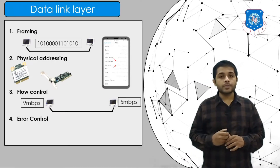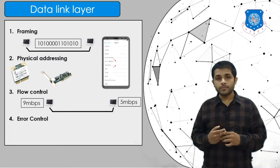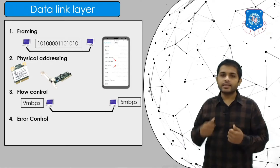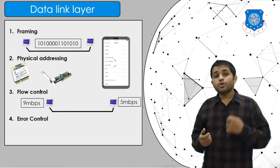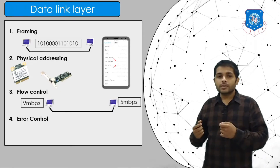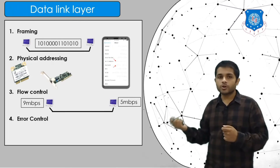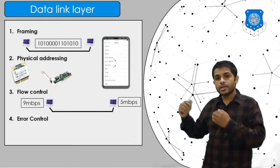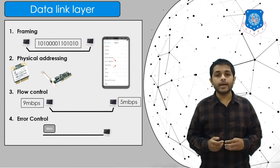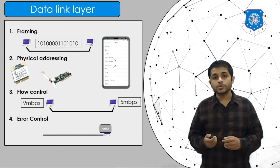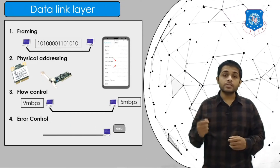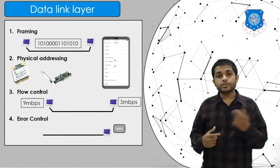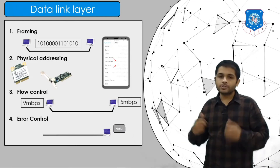The next responsibility is flow control. When two devices are connected with different data rates, there is a possibility that data can be lost. Flow control means that the sender will check whether the receiver has received the data or not. If the receiver is receiving data slowly, the sender will send data at a lower rate. The last responsibility is error control — when a device receives data, it checks whether the received data has any error. If there is an error, it can request the sender to retransmit, or it can detect and correct the error on its own.